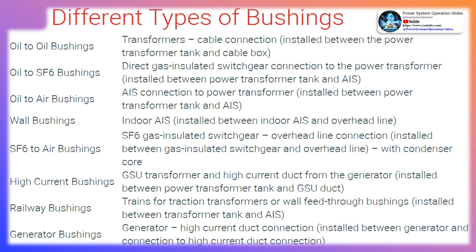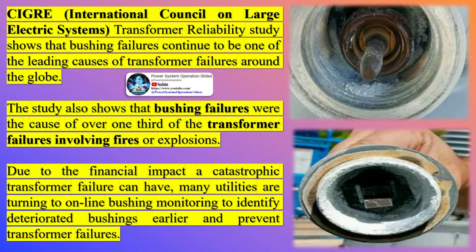How often should we perform online monitoring? Online bushing monitoring is typically a continuous process. The system monitors the condition of the bushings continuously, providing reliable and unambiguous condition assessment. This allows for early detection of faults, and action can be taken before the transformer is damaged. However, the frequency of offline tests, which are performed in addition to online monitoring, may vary, and are often performed on a routine schedule, perhaps once every few years.